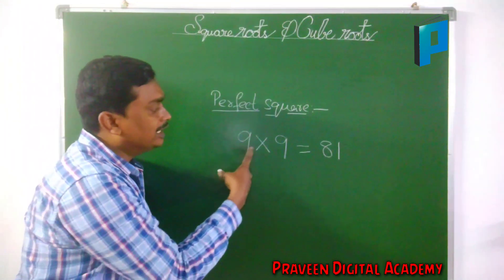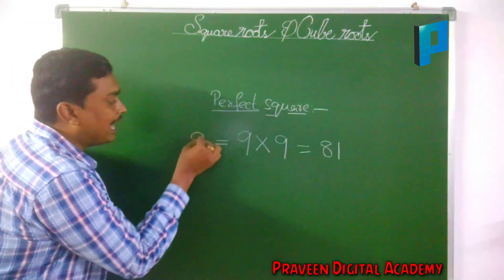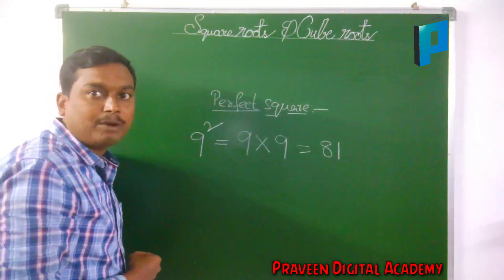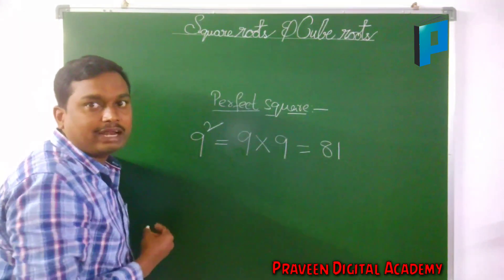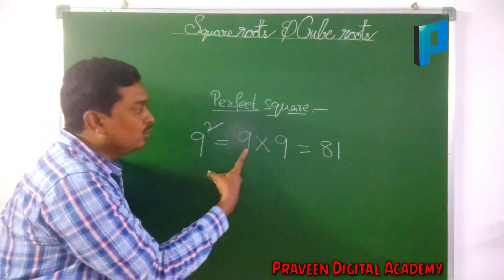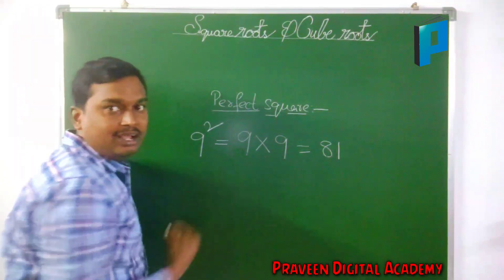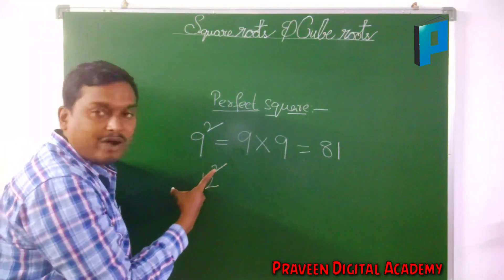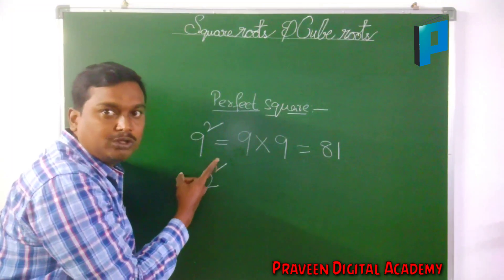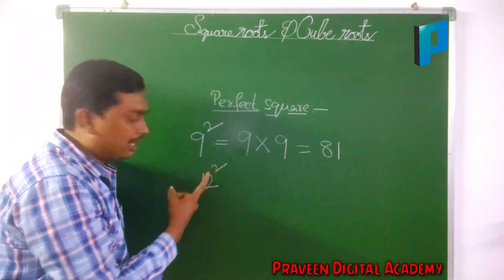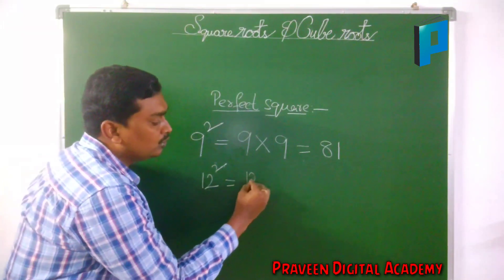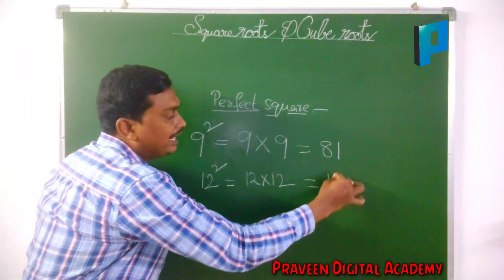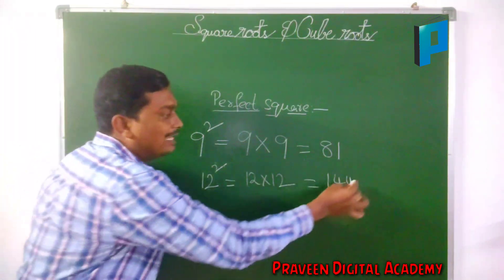81 is a perfect square of 9. Wherever you are having a square, we write 9 into 9 as 9 square, and if you are having 2 on the power we say it as square. So 9 square is equal to 9 into 9, which equals 81. One more number: 12 — the square of 12 means in the power you should have 2, then we say it as square. 12 square is equal to 12 into 12.